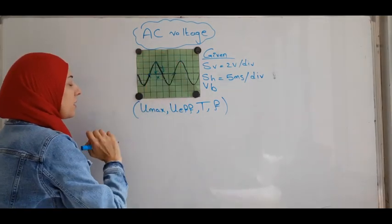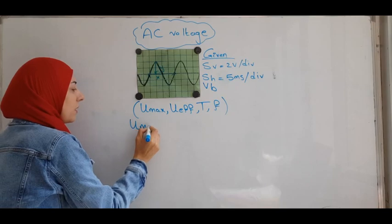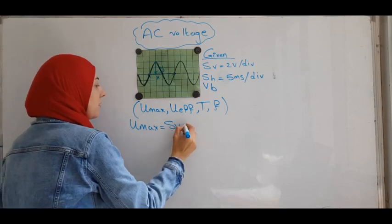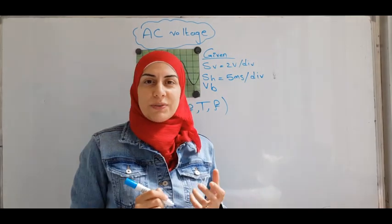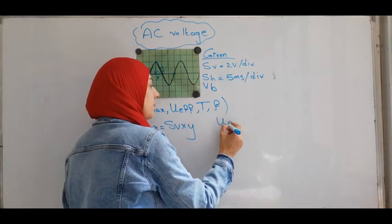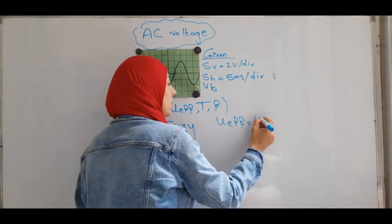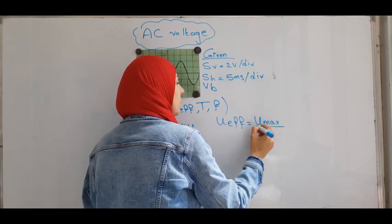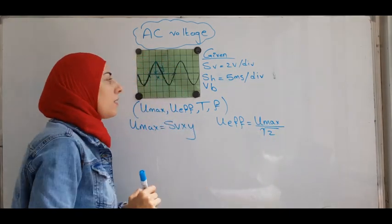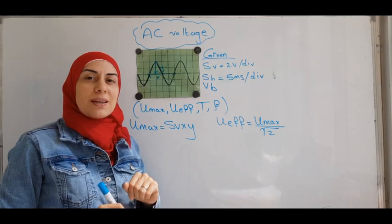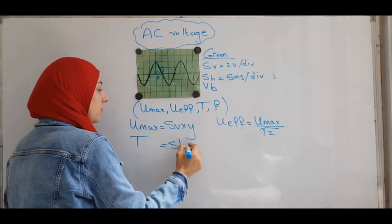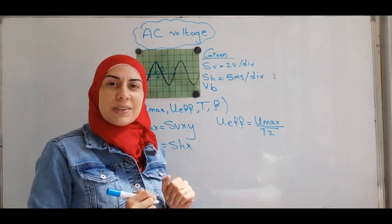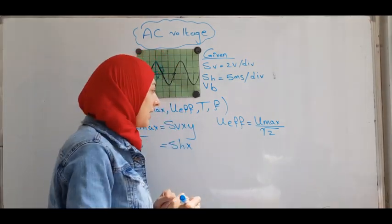From SV and Y, we can get U maximum. U maximum equals SV times Y. From U maximum, we can get U effective. From X and SH, we can get the period T. And from the period T, we can get the frequency F.